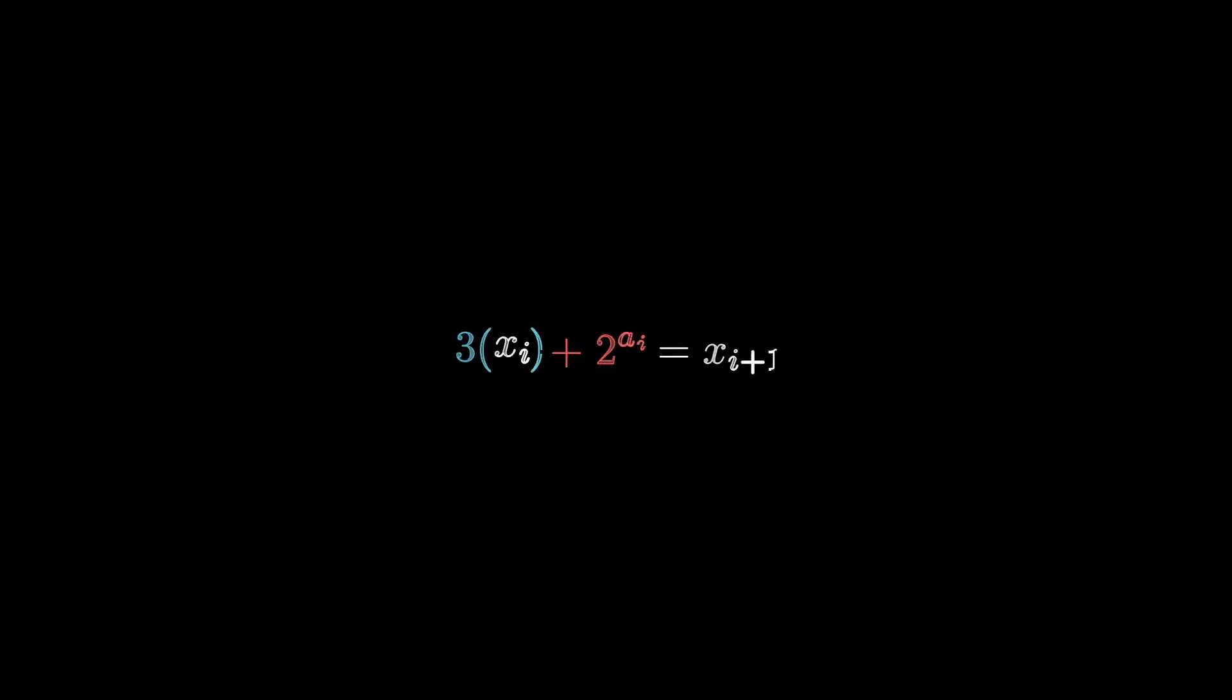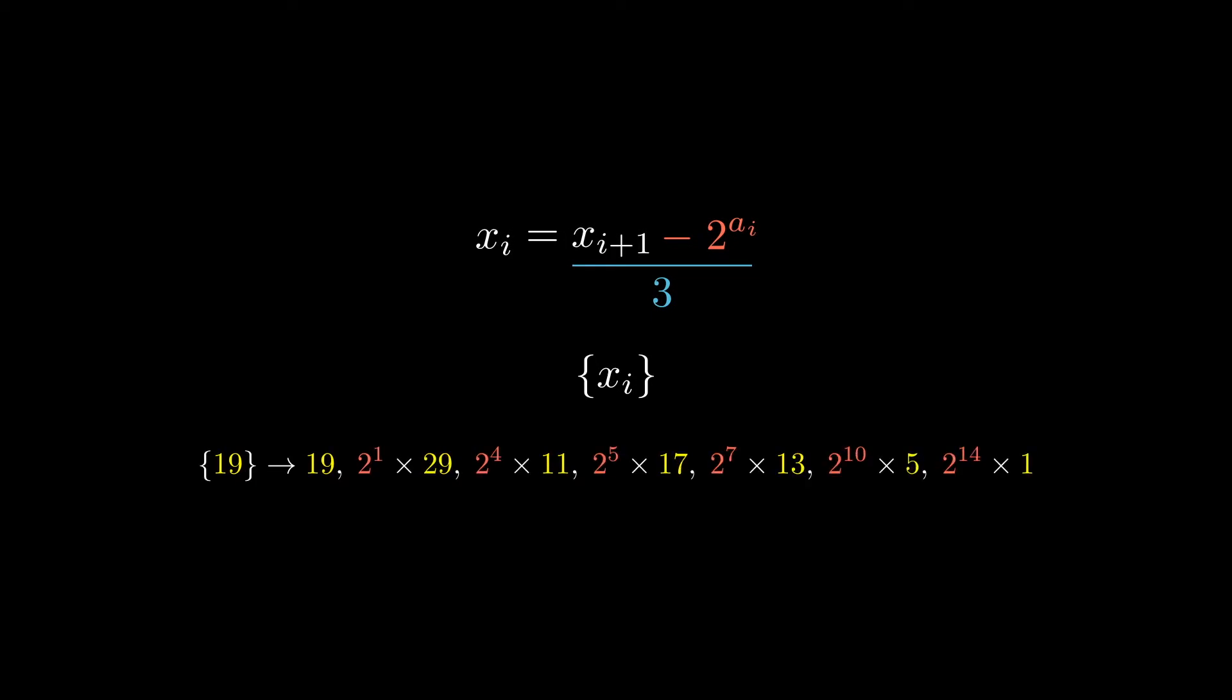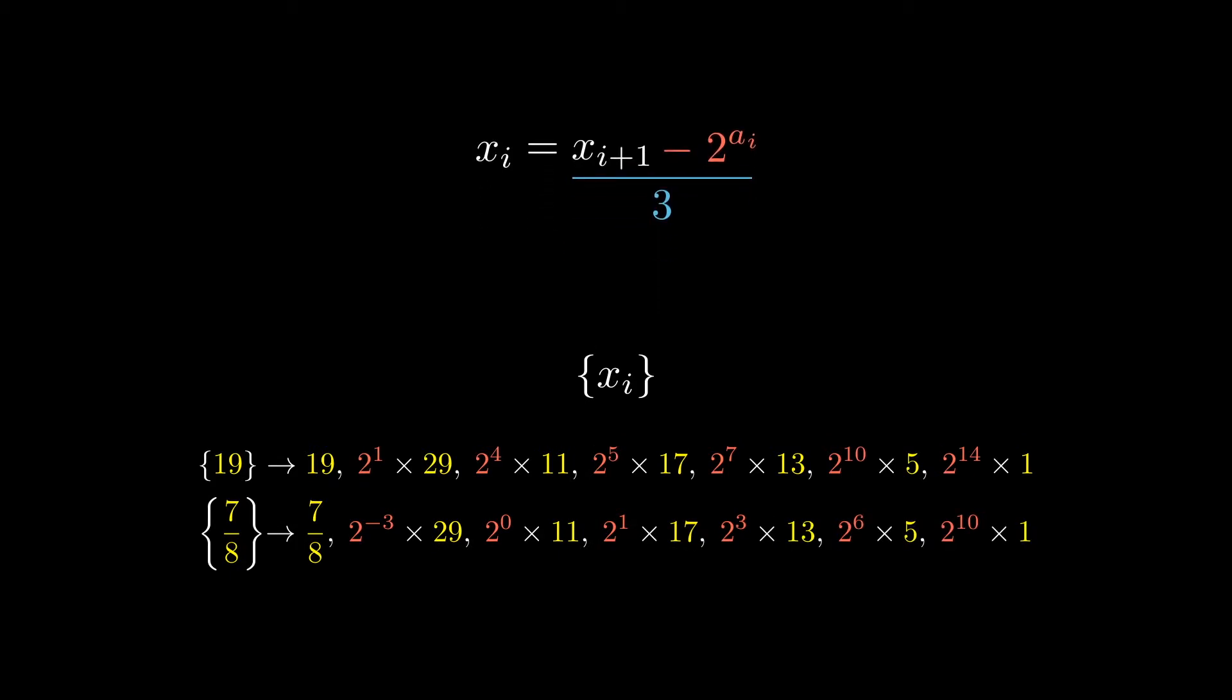So when I write out this algorithm, I actually like to rearrange the equation a little bit. And these are the paths for the numbers 19 as well as 7 over 8. And what you can do is you can actually pluck out the powers of two from these paths, and you can rewrite them in a descending order like this.